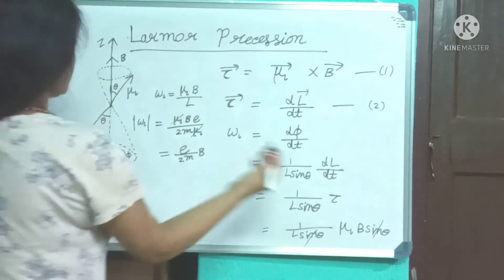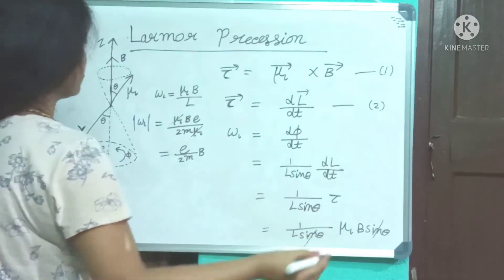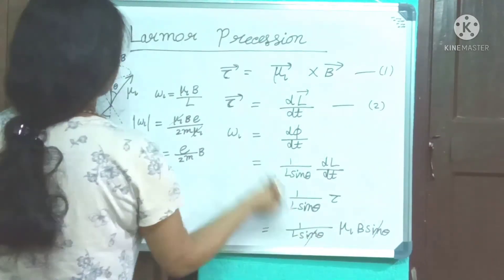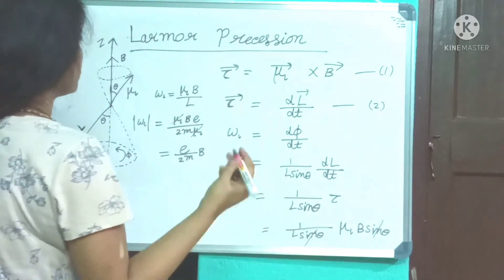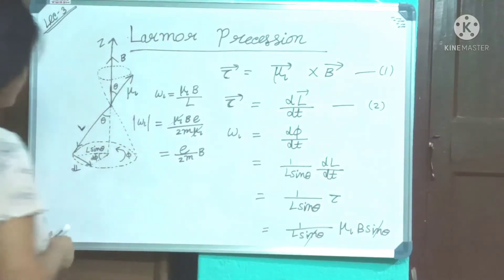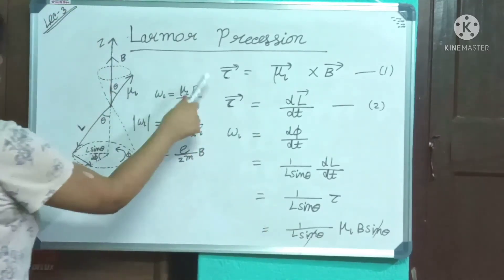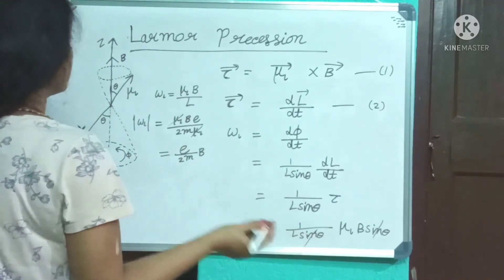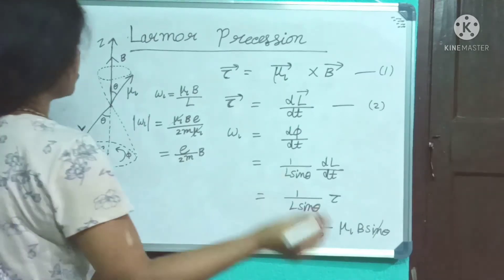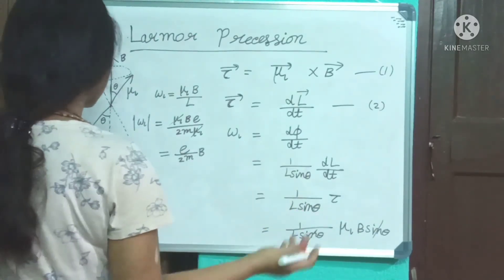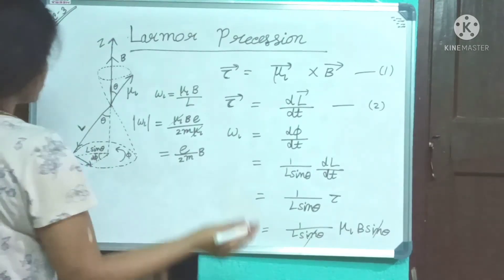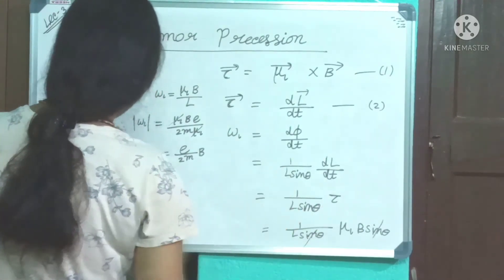Whenever a magnetic moment μ is placed in an external magnetic field B, it experiences a torque τ that tends to align μ_L along B. This tendency results in rotational energy which must be dissipated, but since there is no such dissipation process, μ_L precesses around B keeping θ and energy constant. Today we discussed the magnetic moment of the electron, Larmor frequency, and Larmor precession; next class will cover the vector atom model.